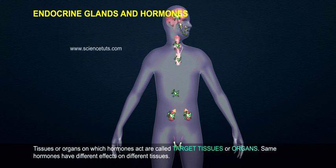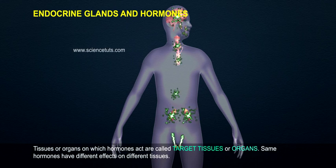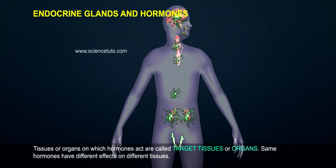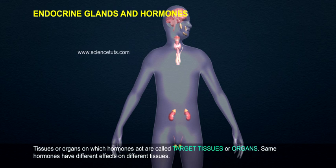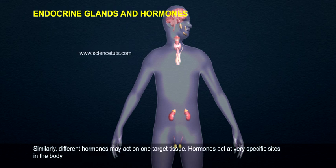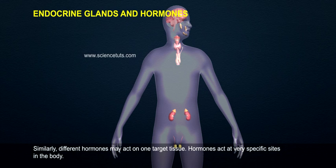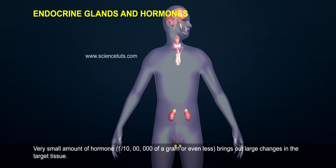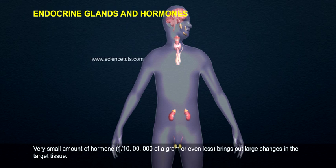Tissues or organs on which hormones act are called target tissues or organs. The same hormones have different effects on different tissues. Similarly, different hormones may act on one target tissue. Hormones act at very specific sites in the body. A very small amount of hormone — 1 in 10 million of a gram or even less — brings out large changes in the target tissue.